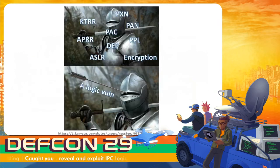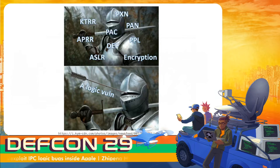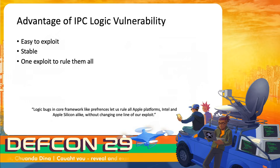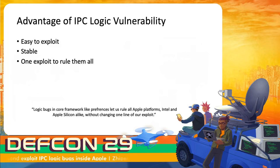There are many security mechanisms on Apple platform that try to make vulnerabilities harder to exploit, like DEP, ASLR, and PAC. But you probably noticed that logic bugs are not affected by these security features — that's just awesome. Logic vulnerabilities have many advantages: though hard to find, they are easy to exploit, and exploitation is always stable. Logic vulnerabilities often exist across platforms, so one exploit could rule them all. Logic bugs in core frameworks like Preferences let us rule all Apple platforms — Intel and Apple Silicon alike — without changing one line of our exploit.